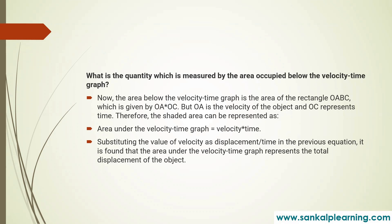The quantity measured by the area occupied below the velocity-time graph: let us draw the velocity-time graph so the understanding is easy. Here this is the time axis and this is the velocity axis. The area below the graph, for uniform motion, is what we want to find.